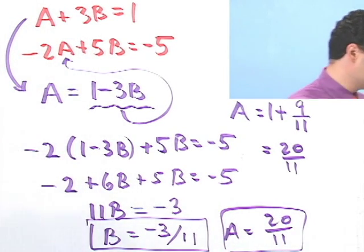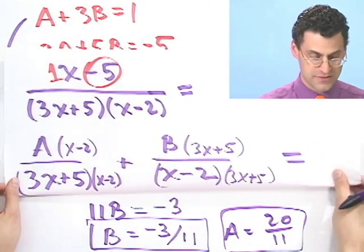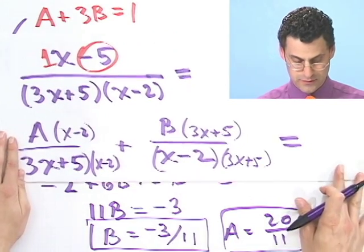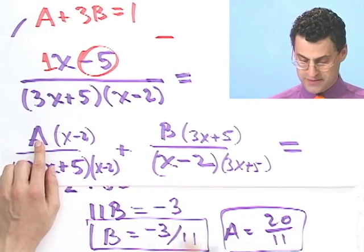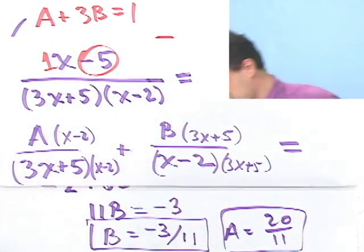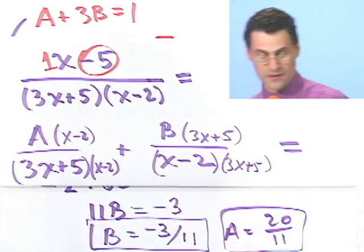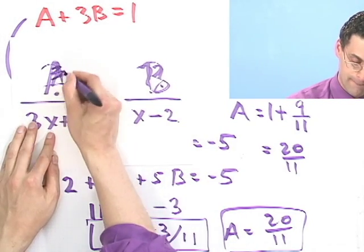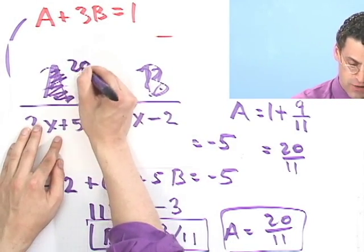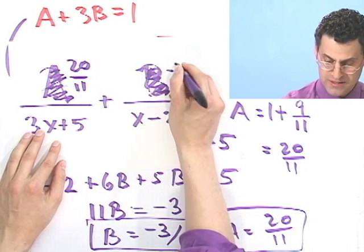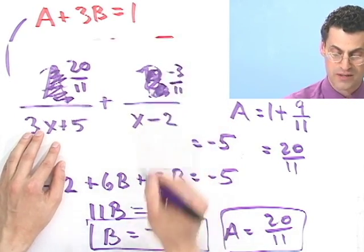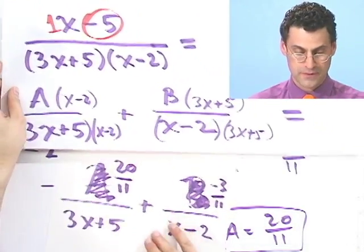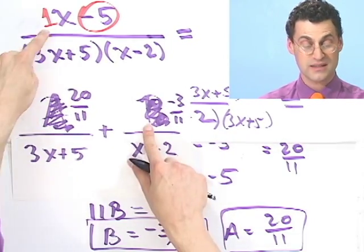So what's the answer to the original question? The answer to the original question is, A has to be 20 elevenths and B has to be minus 3 elevenths. If I bring this back here, what I see is, if I put in 20 over 11 as the number on top here, and minus 3 over 11 as the number on top here, when you take those two fractions and combine them, what you get is that answer.